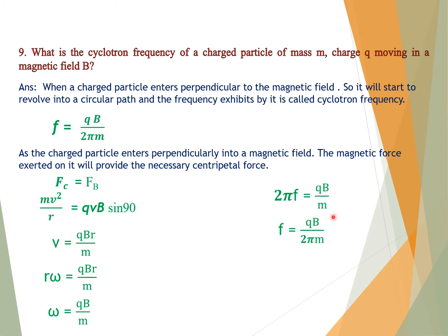When a charged particle moves perpendicularly in a magnetic field, it experiences a force because its own magnetic field interacts with the external magnetic field. As a result, a centripetal force is applied and the charged particle revolves in a circular path. The cyclotron frequency is given by F = QB / (2πM), from which the frequency of the charged particle can be determined.